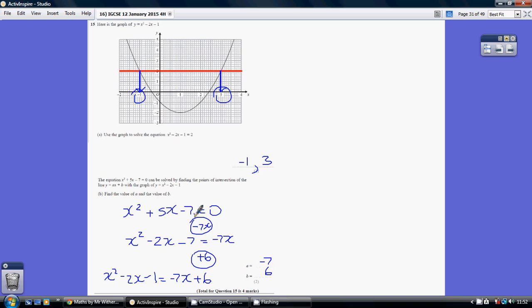We need to adjust our left hand side to becoming x squared minus 2x minus 1. So how do we convert 5x to minus 2x? Well we add minus 7x to both sides. So at this point we've got x squared minus 2x minus 7 equaling minus 7.